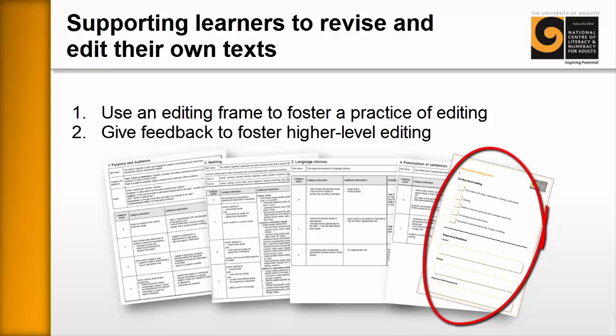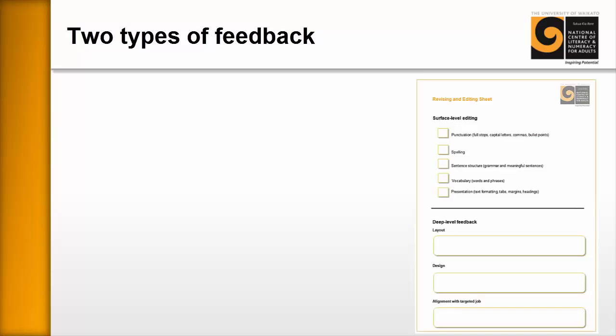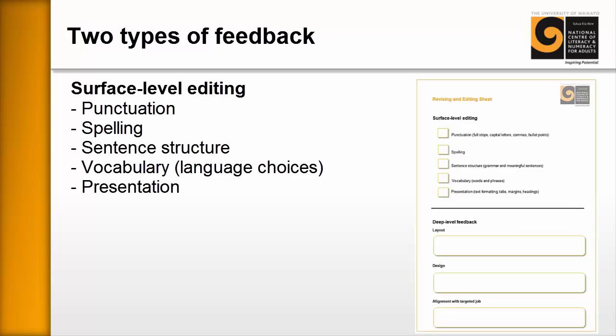I like this editing frame because it's designed for learners at the lower steps of the learning progressions. The particular form we're going to use involves two types of feedback. The first is what we call surface level editing — this has to do with the surface level features of any text, for example punctuation, spelling, sentence structure, vocabulary, and presentation.